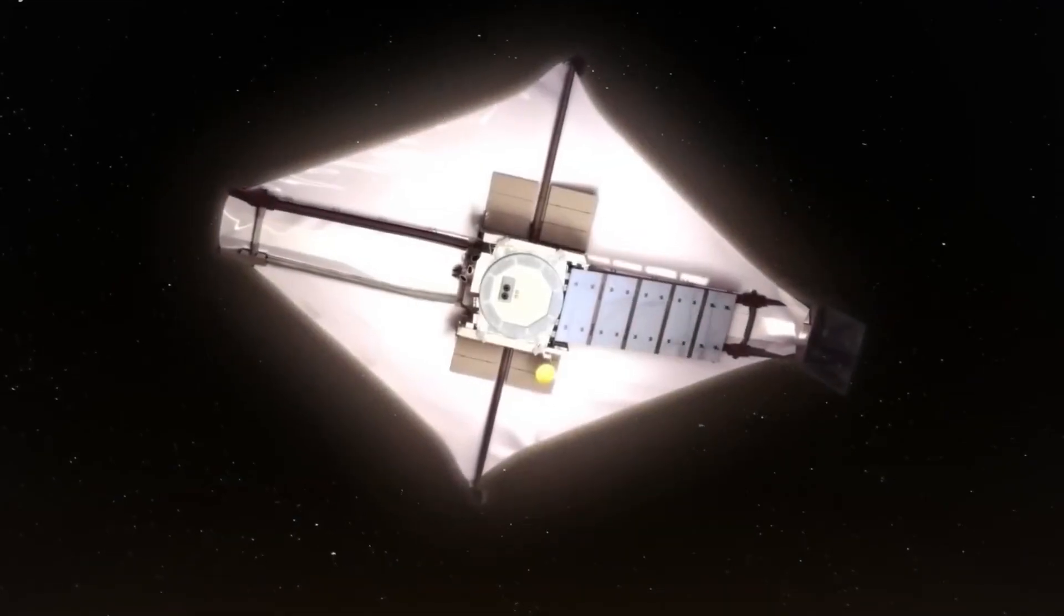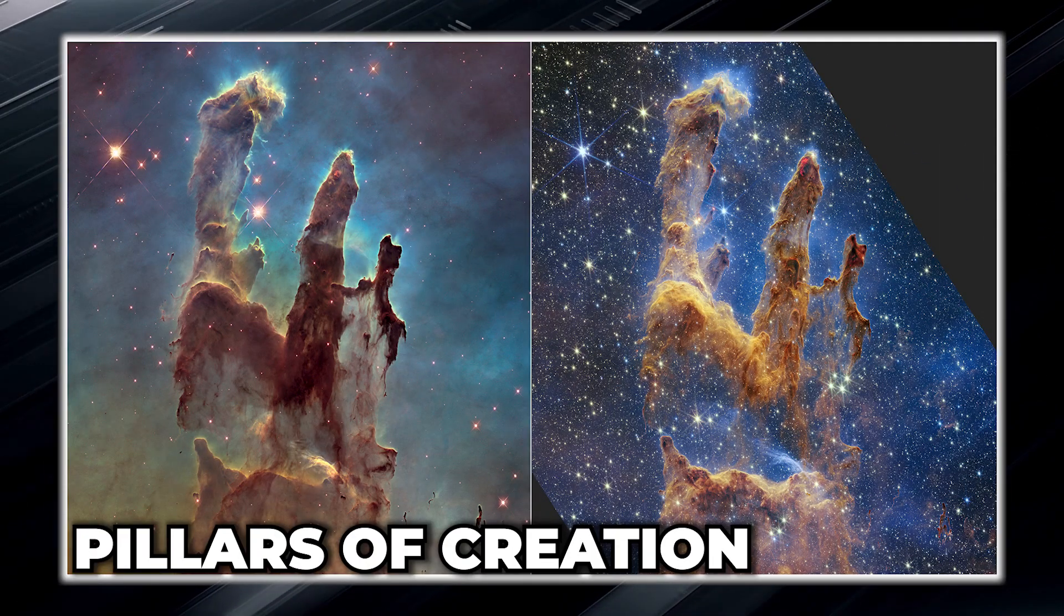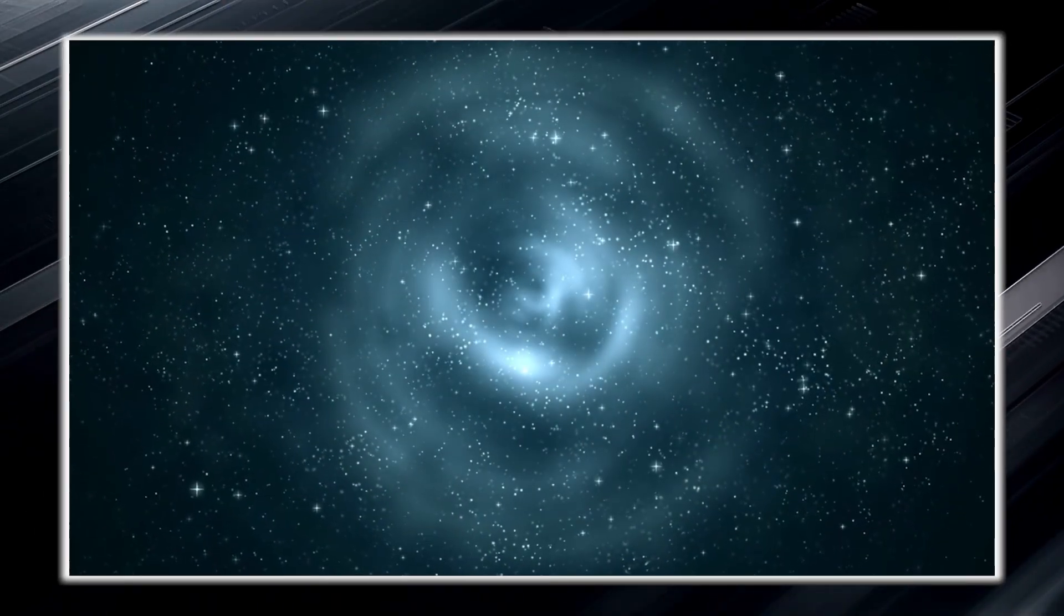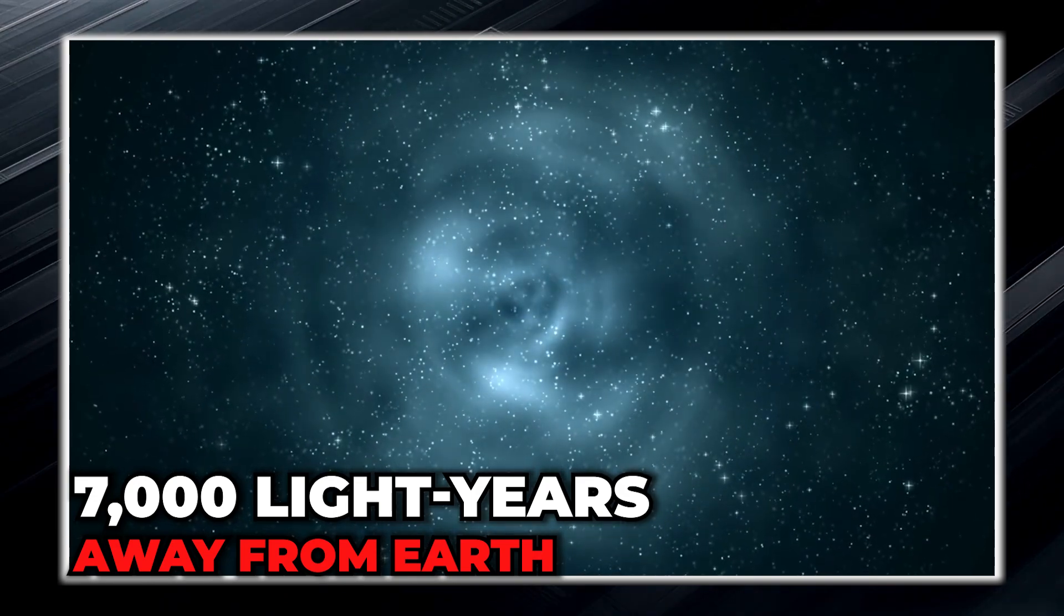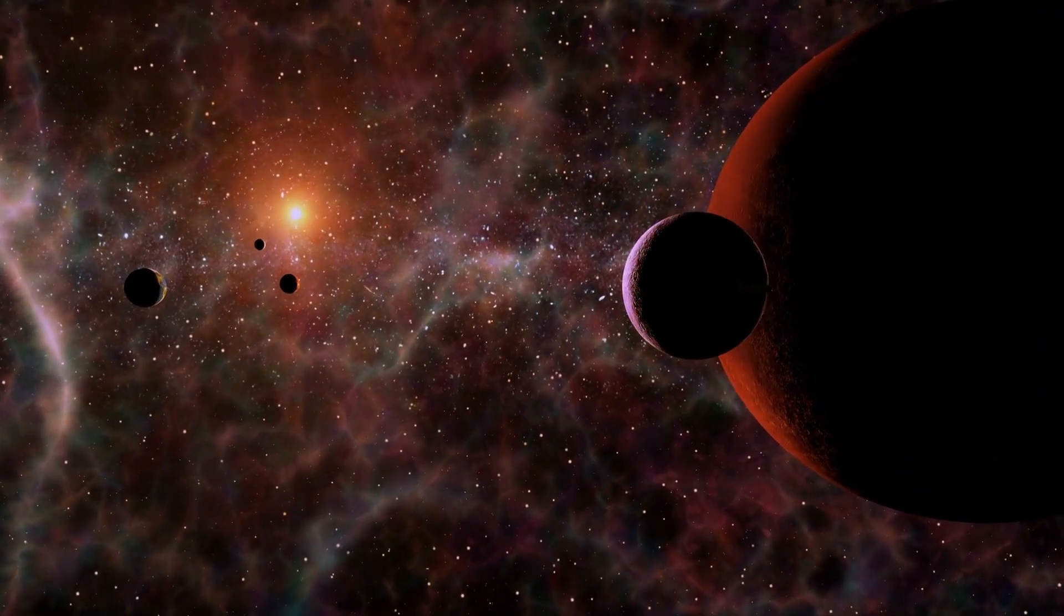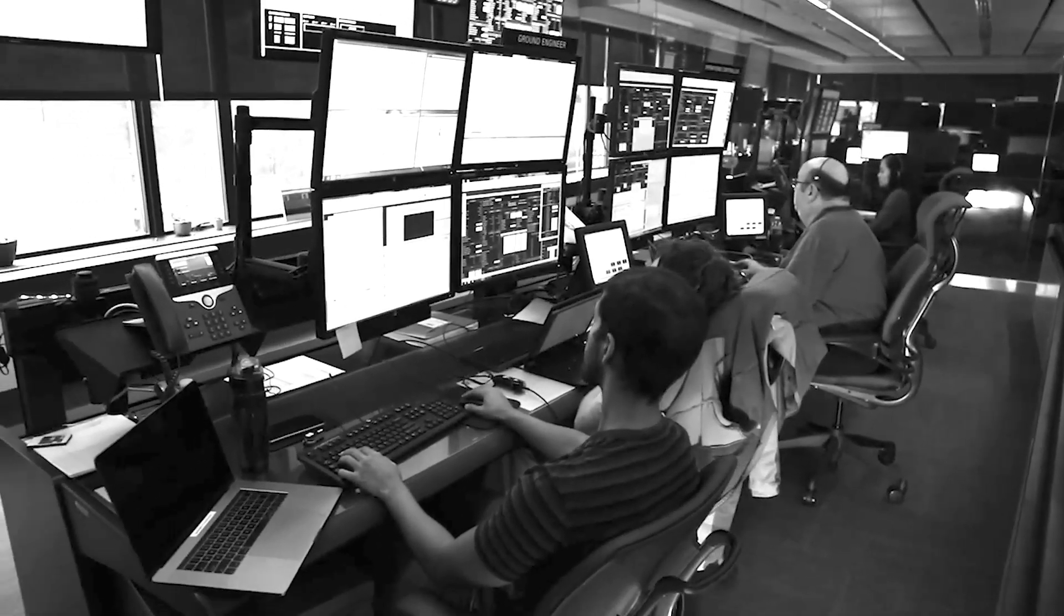When the James Webb turned its instruments toward the iconic Pillars of Creation, it captured the famous dust clouds in incredible detail. These pillars are located in the constellation Serpens, about 7,000 light years away from Earth. The Pillars of Creation are part of the Eagle Nebula, large clouds of gas and dust that were first photographed by the Hubble Space Telescope in 1995.